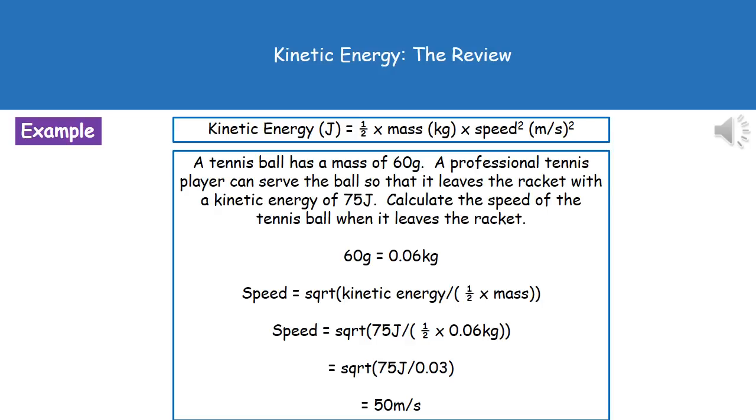First thing we need to do is to convert our 60 grams into kilograms. 60 grams, changing into kilograms, what we need to do is divide it by 1,000. So 60 divided by 1,000 gives us 0.06 kilograms. That's our mass.